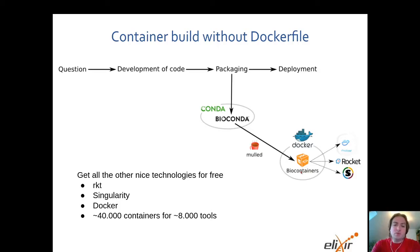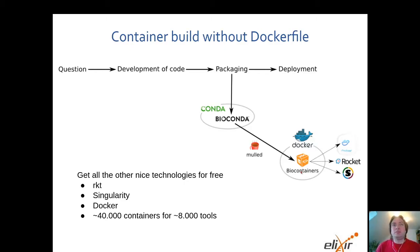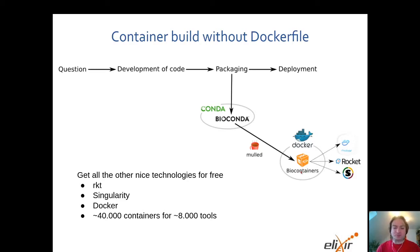Over the last years we have created 40,000 containers for approximately 8,000 tools. This is one of the key benefits — we don't want to maintain 8,000 Dockerfiles next to our Conda packages.